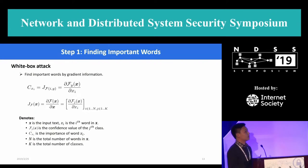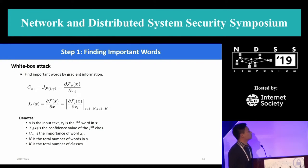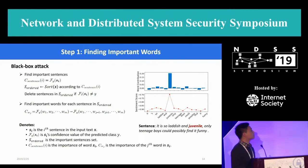At a high level, TextBugger can be summarized into three main steps. The first step is to find important words that contribute to the final predictions most. For white box attack, we find important words by computing the Jacobian matrix of the classifier's prediction with respect to the input text, which is denoted x. The importance of the i-th word in x is denoted by c(x,i), which equals the i-th component of the Jacobian matrix. For black box attack, we first find important sentences to improve efficiency, and then we find important words for each important sentence by directly measuring the effect of removing each word.